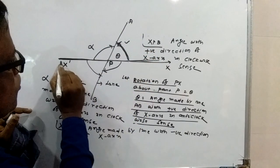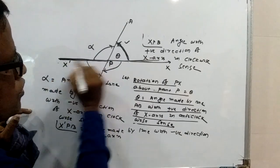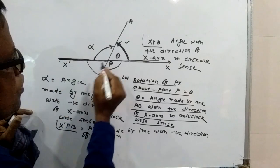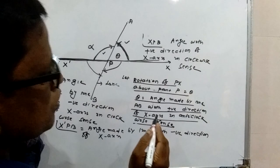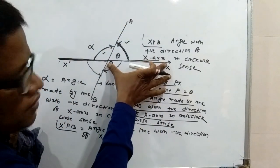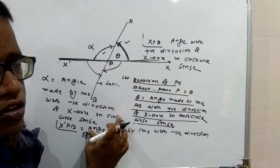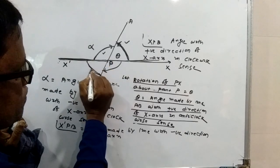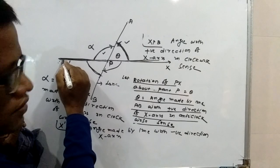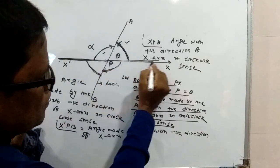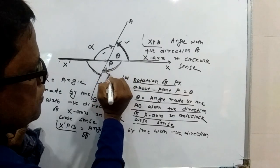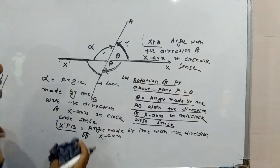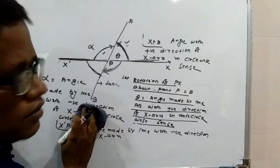But if you consider this angle alpha, this means X-dash, or PX rotates in clockwise sense. And PX-dash is your negative direction of X axis. So we cannot say this is the angle of inclination. According to the definition, the angle made by line with positive direction of X axis in anticlockwise sense — if you consider this angle, this is your positive direction but clockwise sense. So this cannot be the angle of inclination.